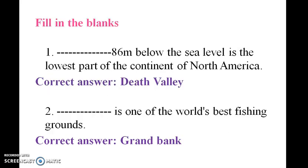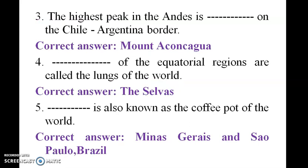Fill in the blanks: Dash — 86 meters below sea level — is the lowest part of the continent of North America, Death Valley. Dash is one of the world's best fishing grounds — Grand Banks. The highest peak in the Andes is dash, on the Chile and Argentina border — Mount Aconcagua.